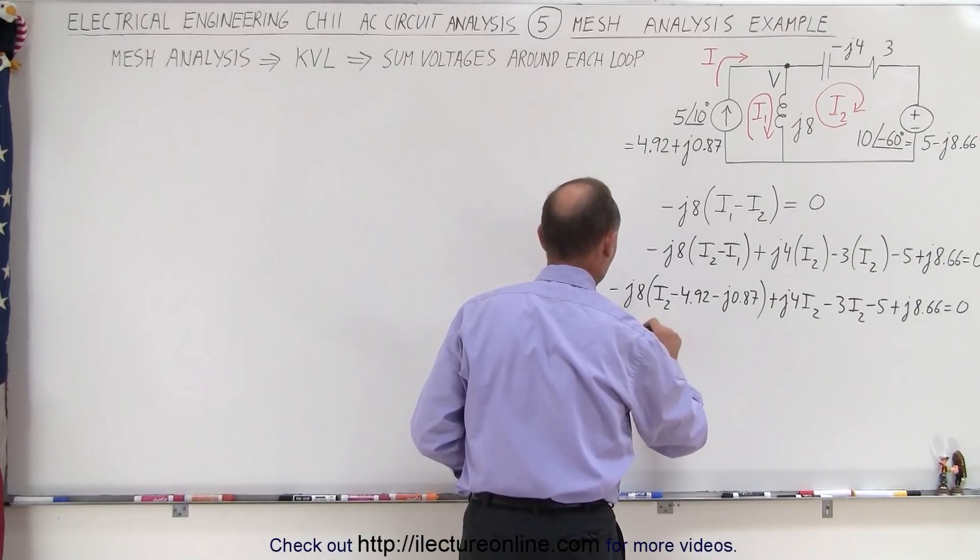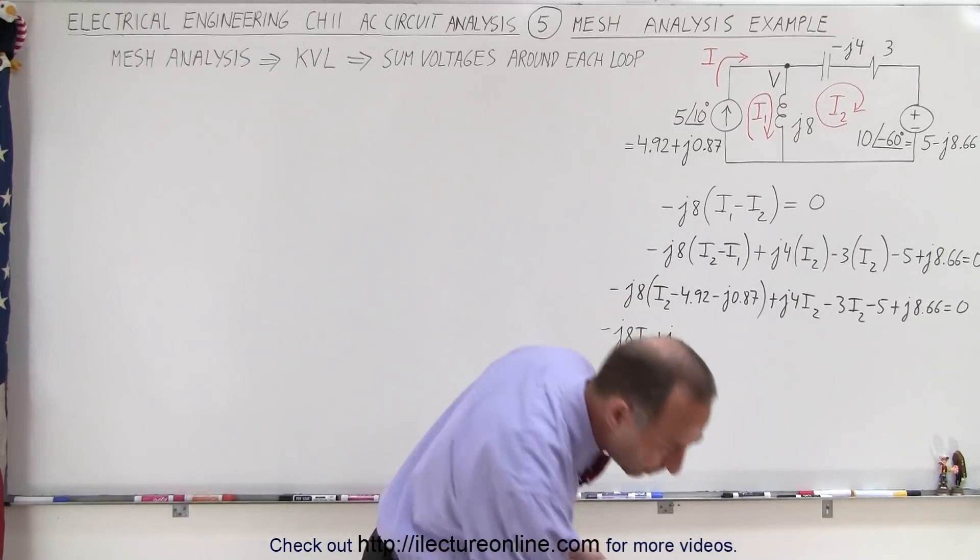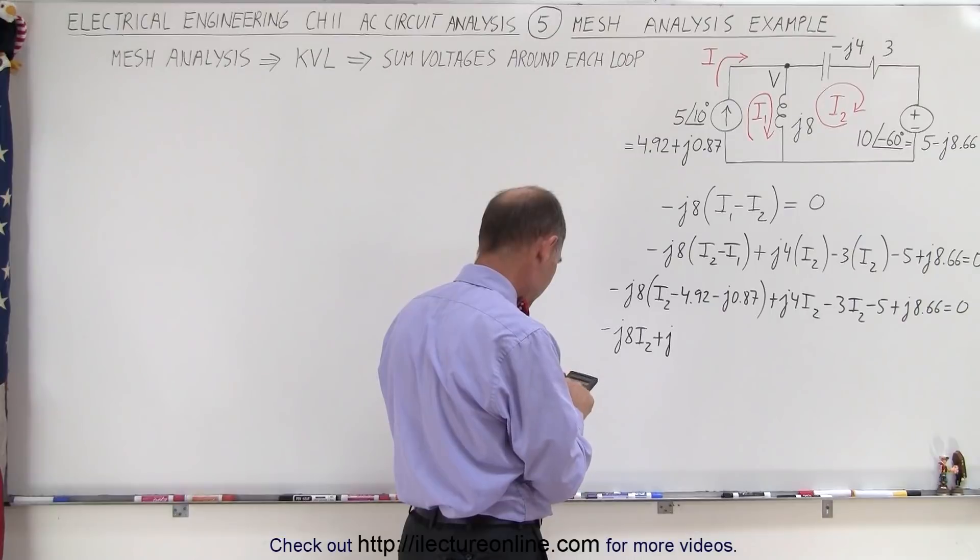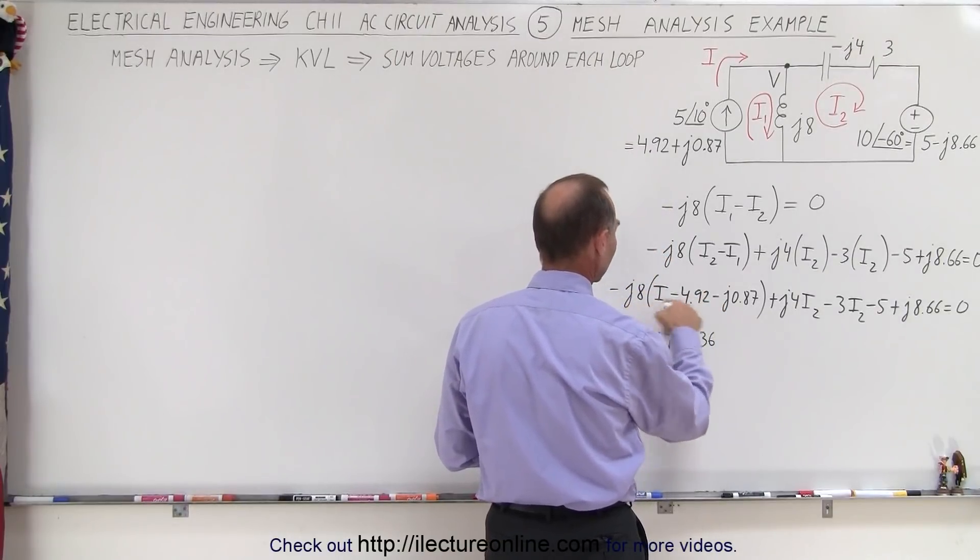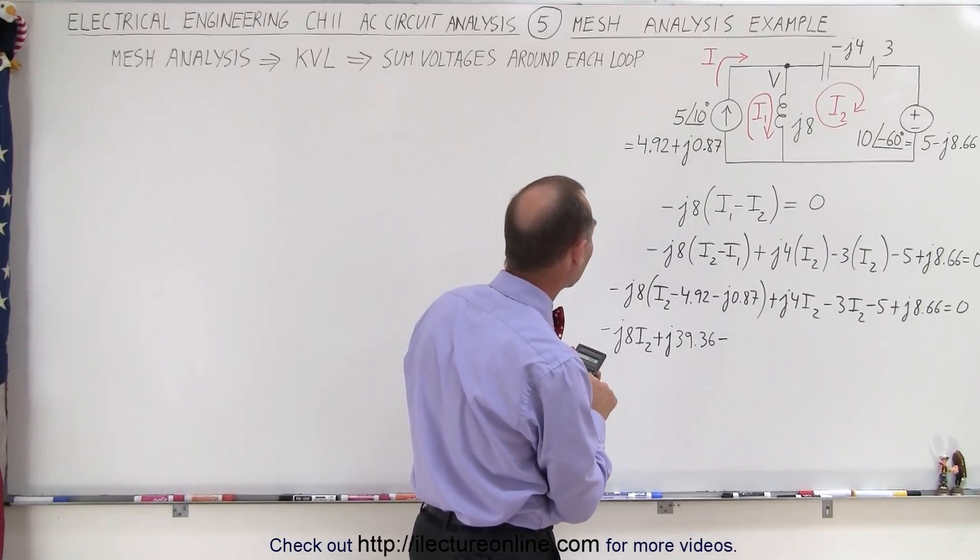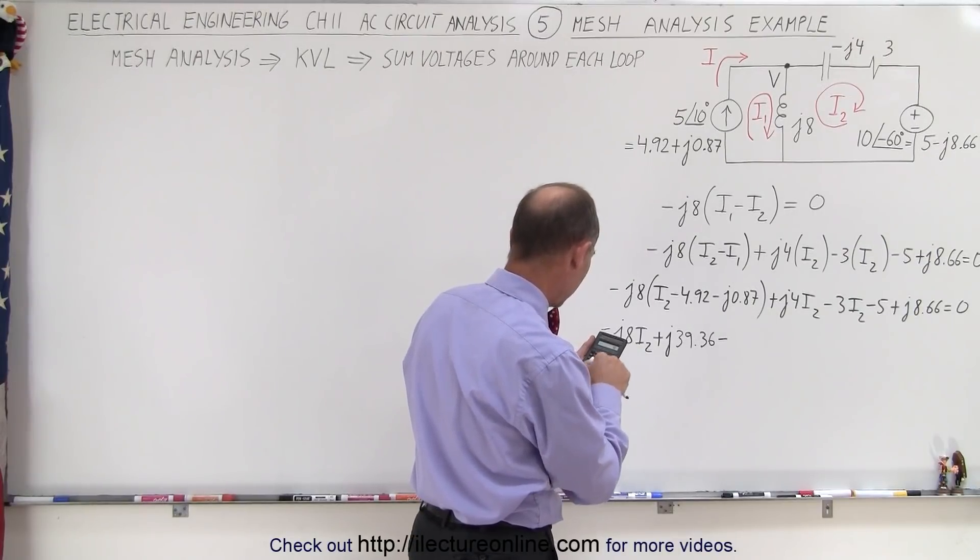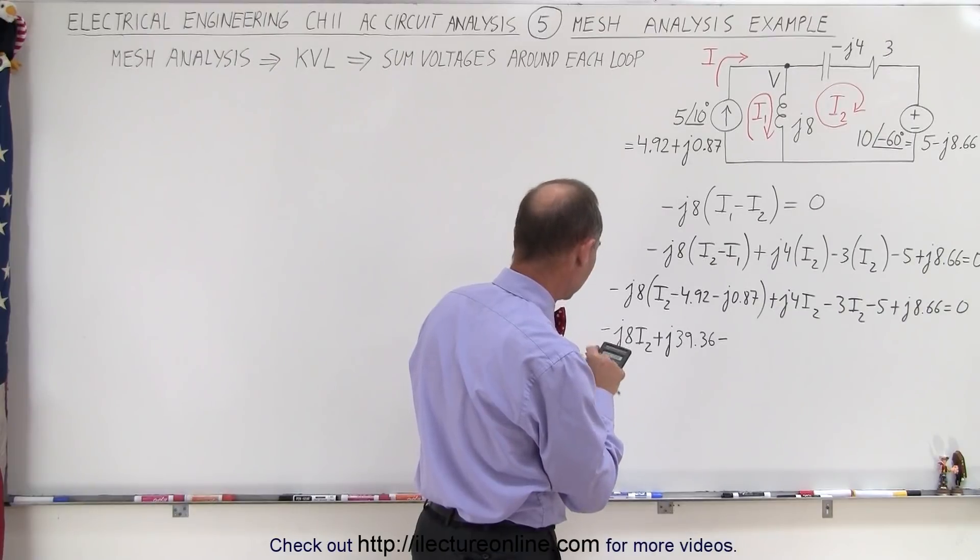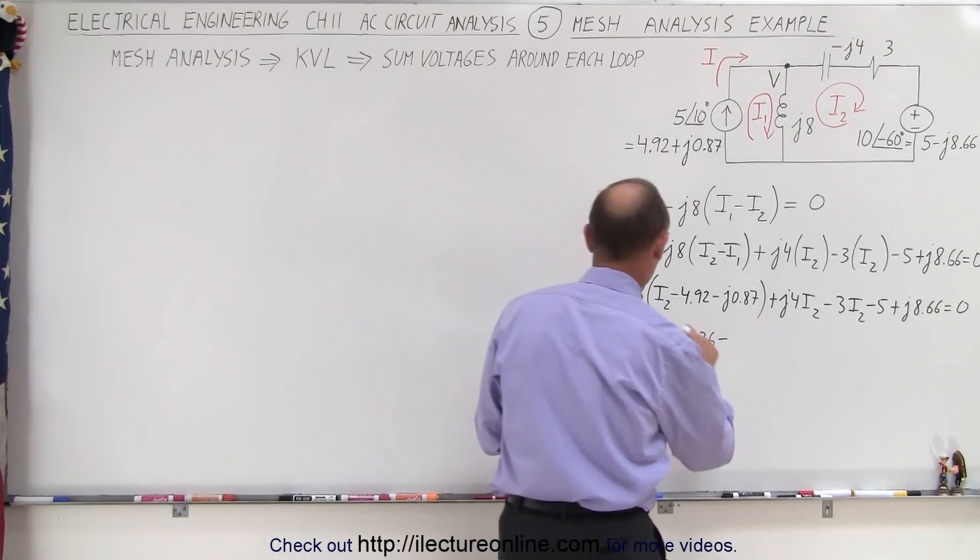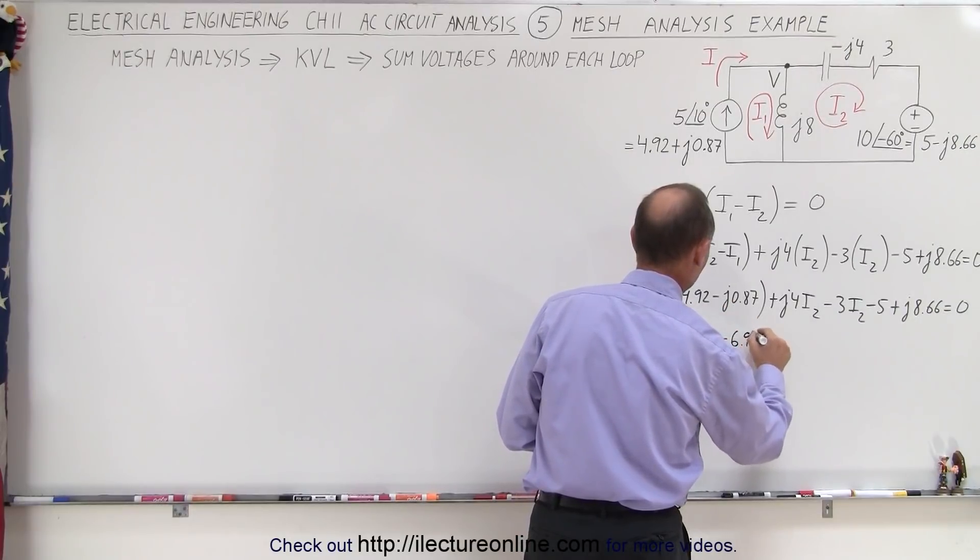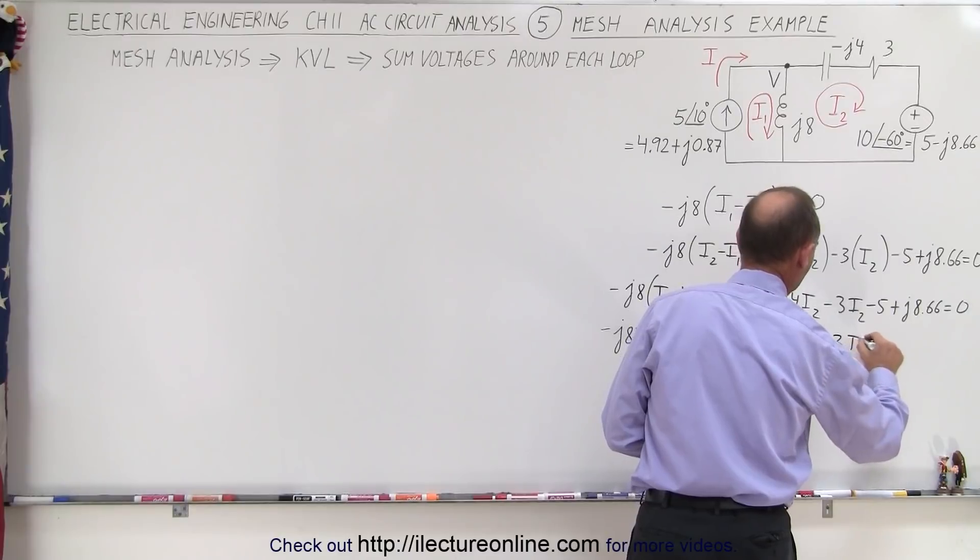So we have minus J8 times I2. This times this that gives us minus times minus that's plus J. 4.92 times 8 that gives us 39.36, a minus times a minus is plus but J times J is minus that gives us a minus 0.87. So 8 times that times 8 equals 6.95 so this times this that would be minus 6.95.